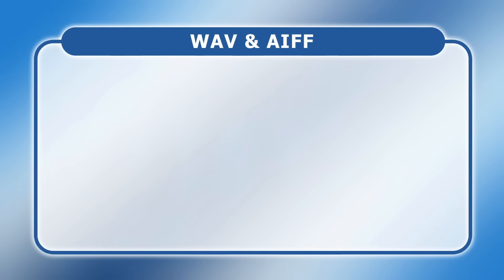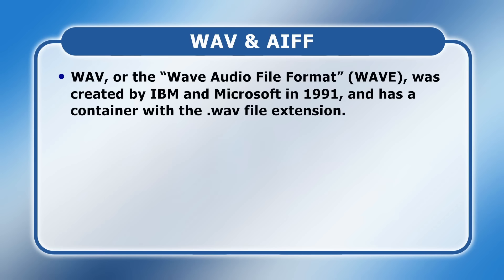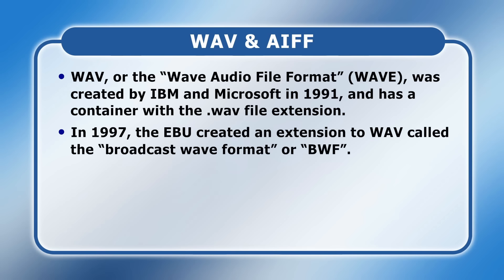Today the preferred formats for audio recording and production are WAV and AIFF, both of which are almost always non-compressed, although each format can technically contain compressed data. WAV, or the WAV audio file format, was created by IBM and Microsoft in 1991 and has a container with the WAV file extension. In 1997, the European Broadcasting Union created an extension to WAV called the Broadcast WAV format or BWF, though the audio data is identical and many BWF files use the WAV file extension.